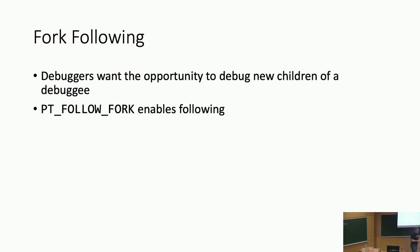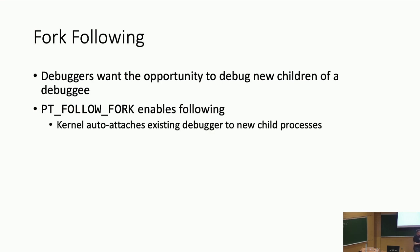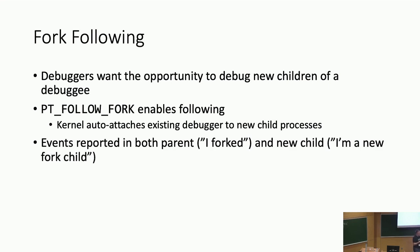In FreeBSD, we support this via a ptrace operation called PT_FOLLOW_FORK. When this is enabled, the kernel auto-attaches to new child processes created by a fork of the process being debugged. We send a fake SIGSTOP to the child process to stop it before it executes its first instruction, so that via the mechanics of ptrace, the debugger will see the new child process via wait and have a chance to do anything it wants before the child starts executing.